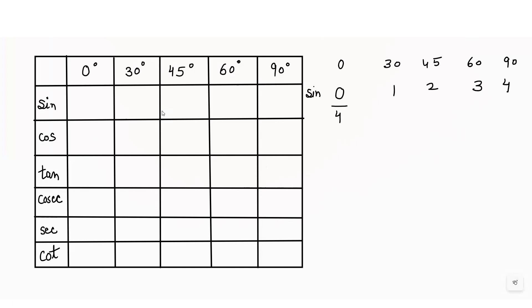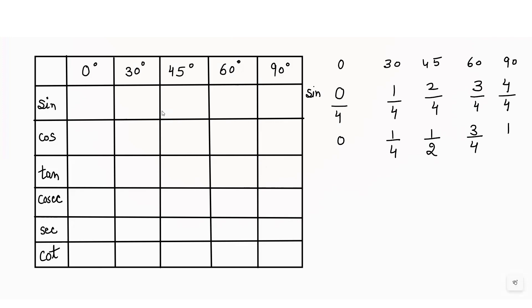Then we'll divide all these values by 4 — that is our second step. If we can simplify them, we will try to simplify them. So we get: 0, then 1/4 simplifies to 1/2, then 3/4 stays, and the last one simplifies to just 1.